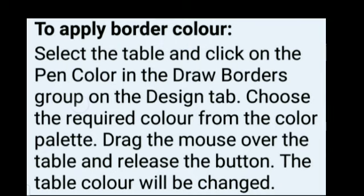To change the border color: click on the pen color option in the draw borders group on the design tab. Table को पहले select कर लेंगे, then click on pen color and choose the required color. उसके बाद mouse को table के border पे drag करेंगे जहाँ जहाँ color लगाना है, और table का border color changed हो जाएगा. So this way we can apply border and change the color of the border.